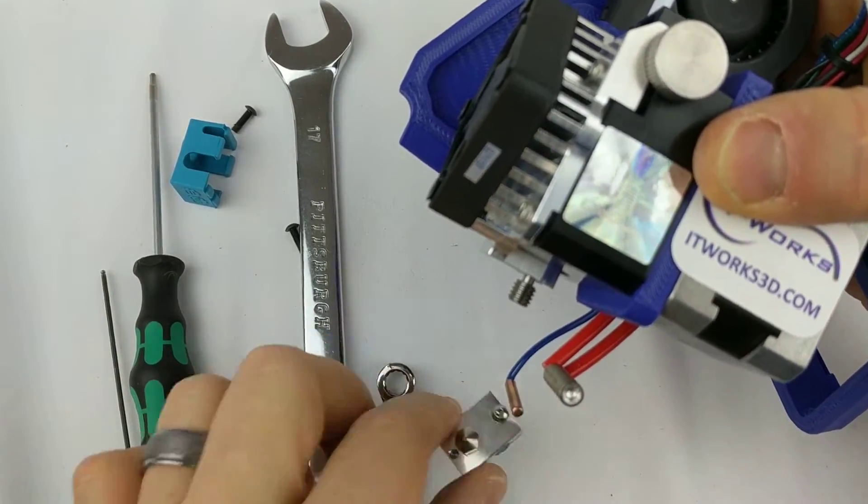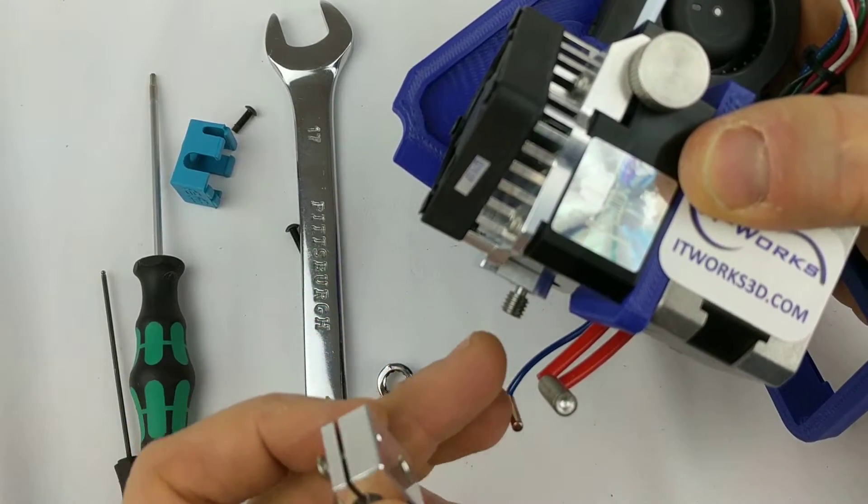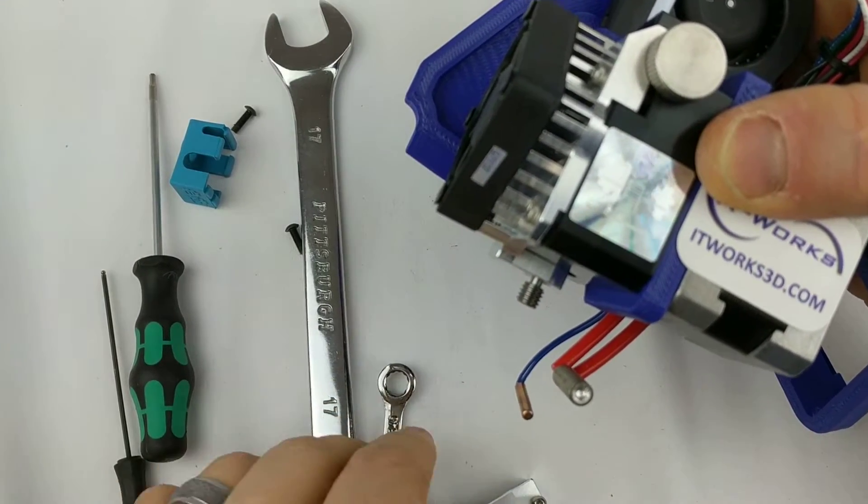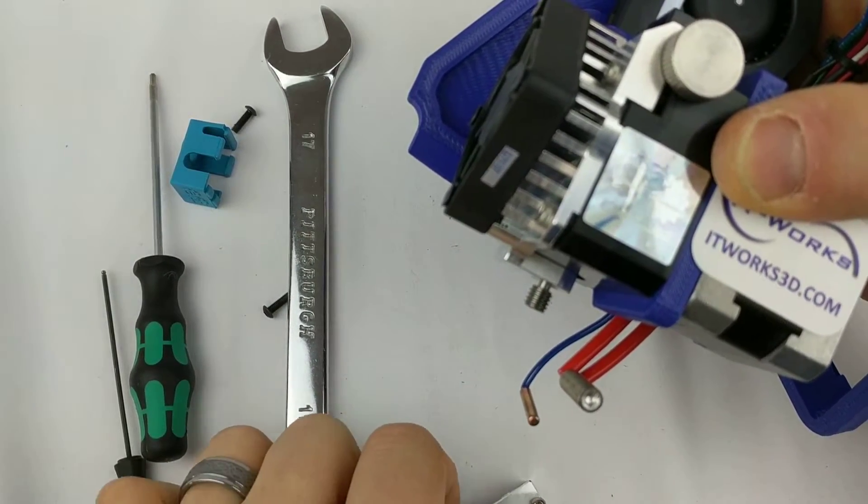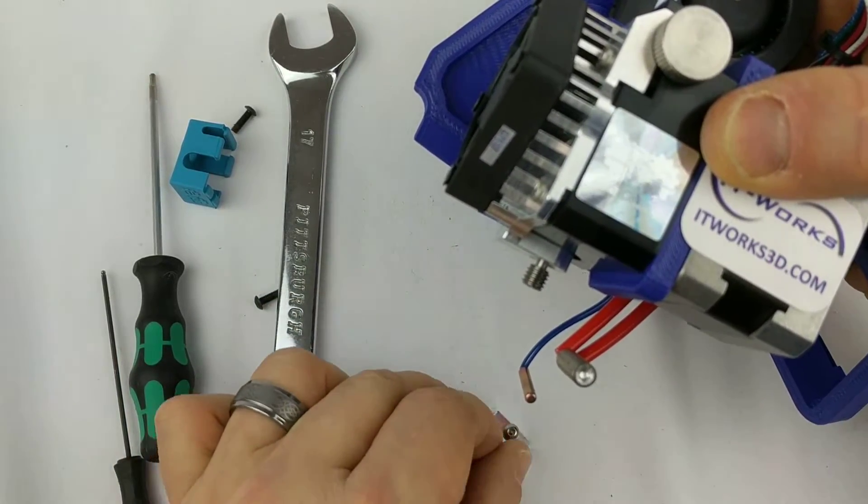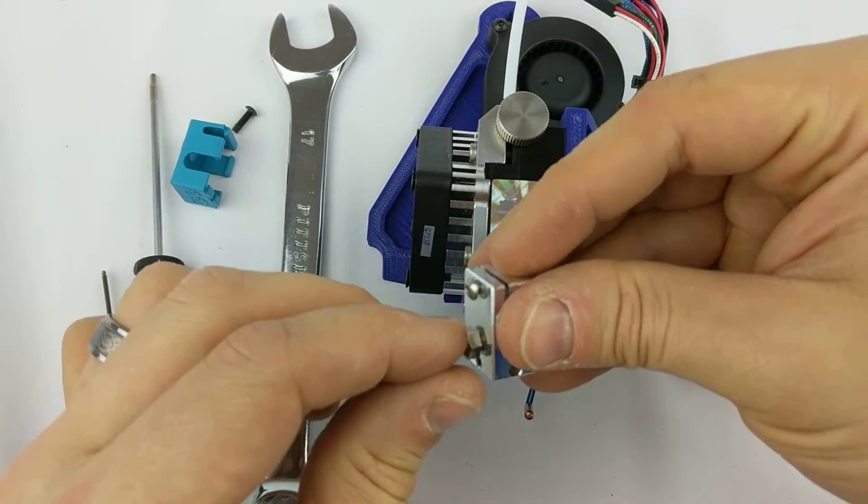Often the heat break will come out with this instead, because having a good tight junction between the face of the heat break here and the nozzle is really important once it's heat tightened. I've already broken this one loose, so that's why it came apart how it did.